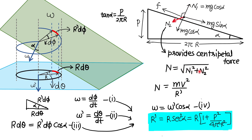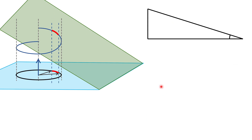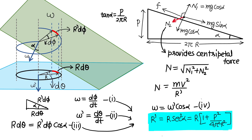We have to determine the normal reaction. N1 is already known as Mg cos α. We have to determine N2, and N2 will provide the centripetal force. So N2 = MV²/R', where R' is the radius of curvature of this part. We are now left with the determination of the radius of curvature of the helix, which in itself is a very good problem to solve. How do we determine this radius of curvature?